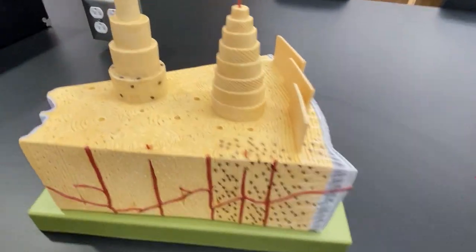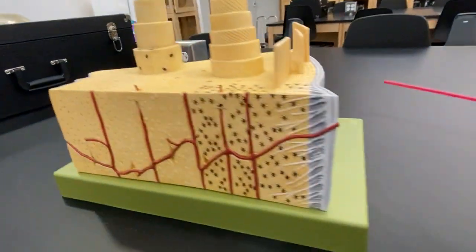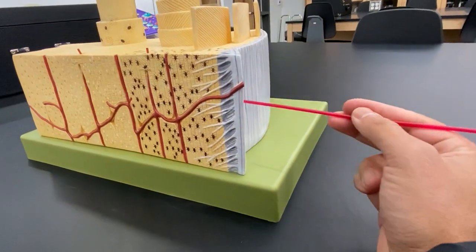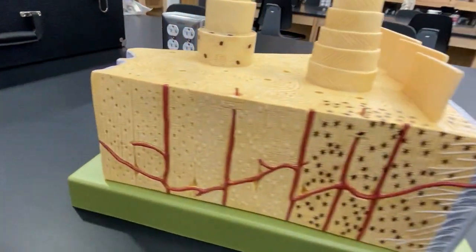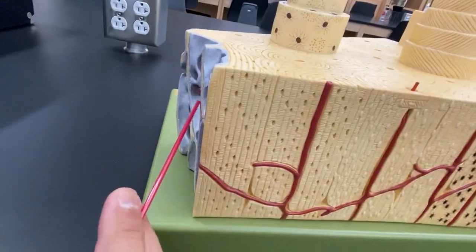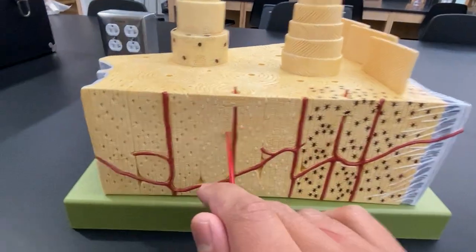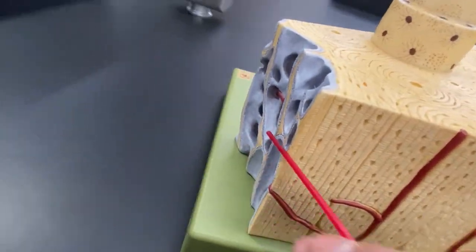All right, so this is the osteon bone model. Here we have this gray layer, which is periosteum. This is endosteum inside. So this is compact bone, spongy bone here.